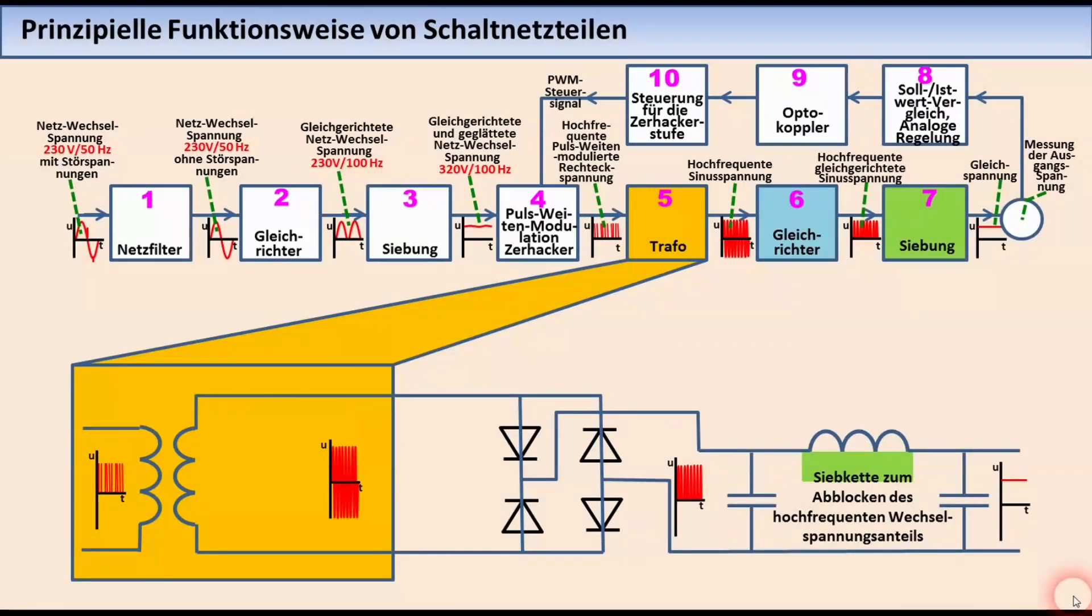Baustein 5 ist ein Transformator, der für die vom Oszillator erzeugte relativ hohe Frequenz dimensioniert ist, nämlich zwischen 10 und 100 kHz. Er hat daher nur einen Bruchteil des Gewichts und der Größe, die ein 50 Hz Travo zum Übertragen der gleichen Leistung haben müsste. Außer zum Transformieren der Rechteckspannung auf den gewünschten Wert, dient der Travo auch als Tiefpassfilter, der die Oberwellen aus der hochfrequenten Rechteckspannung weitgehend herausfiltert, sodass am Eingang des Gleichrichters, nämlich des Bausteins 6, eine sinusähnliche Spannung liegt.